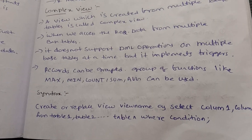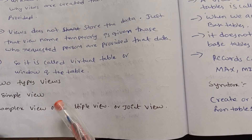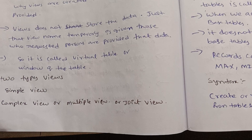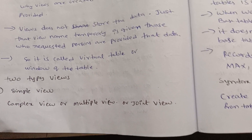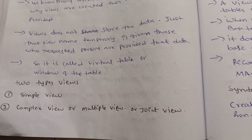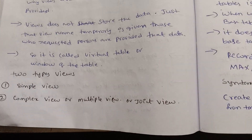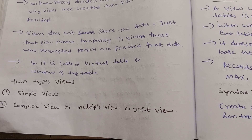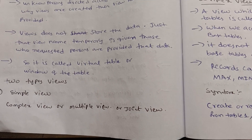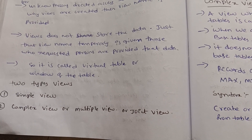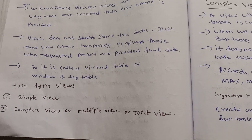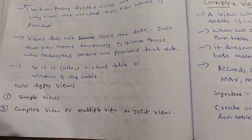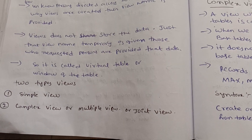So guys, we have two types of views explained. If you want PDFs, only PDF for $49 — check the description for the JN2H updates link. Follow that link. Thank you.